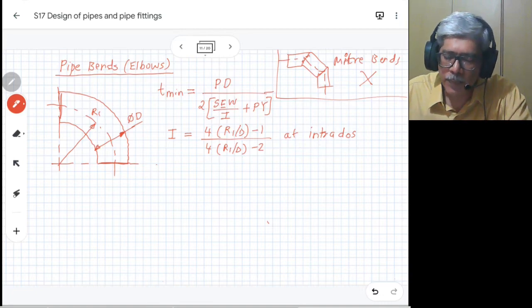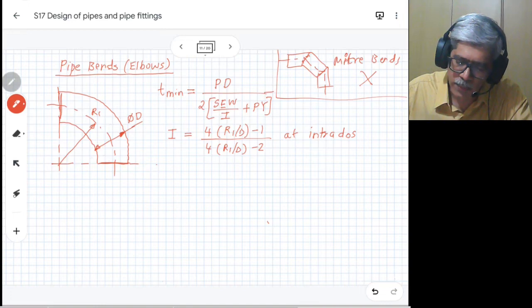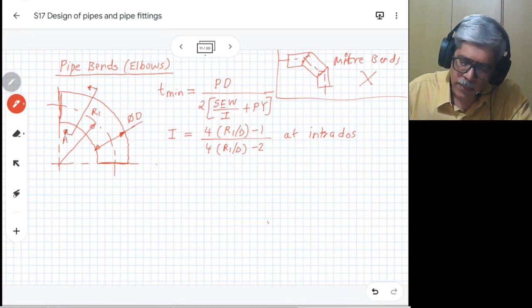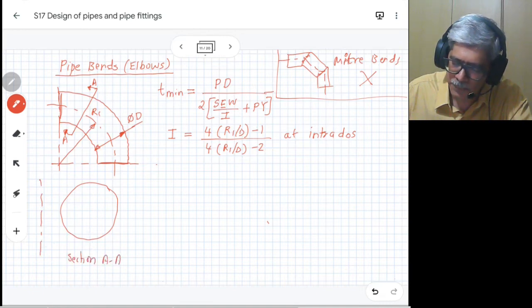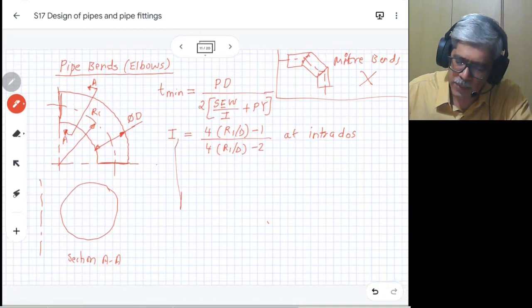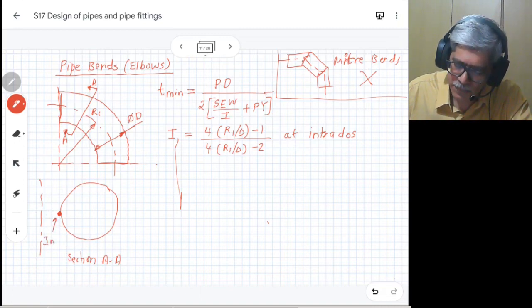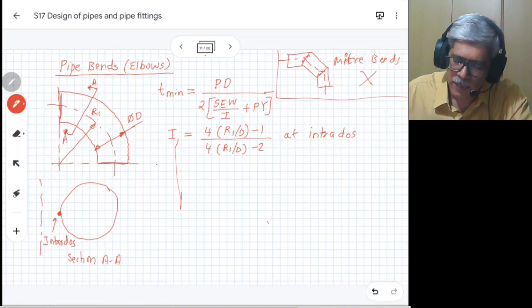In the pipe bends, if you take any cross section - if I take a cross section here and consider this cross section A-A, where this is the centerline of elbow, the left-hand side is towards the bend radius. This particular point is known as intrados, and the other point is known as extrados.